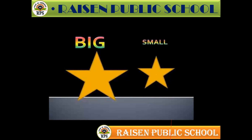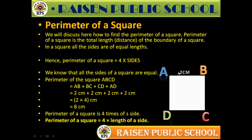Now let's start with the perimeter of the square. We will discuss here how to find the perimeter of the square. The perimeter of a square is the total length of the boundary of a square. The perimeter is called the total length. The formula is: perimeter = 4 multiplied by side.